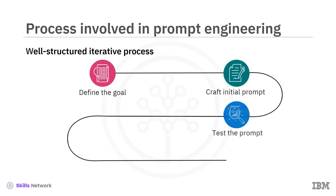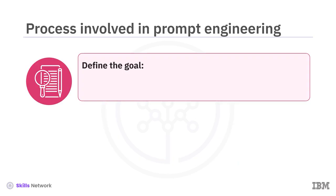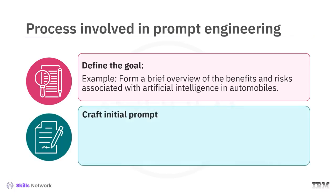Let's understand the step-by-step process involved in creating effective prompts through prompt engineering. Step 1: Define the goal. The initial step in the process involves establishing a distinct goal. You must know exactly what you want the model to generate. For example: 'Form a brief overview of the benefits and risks associated with artificial intelligence and automobiles.'